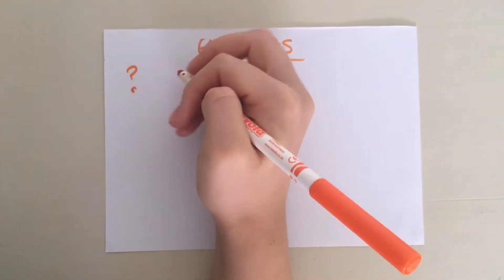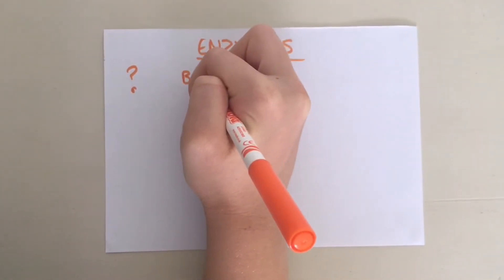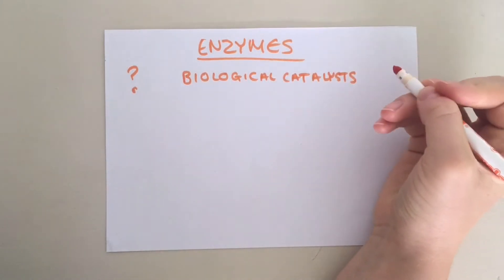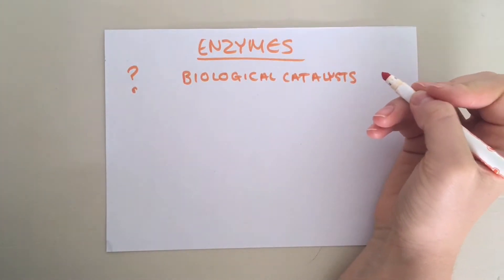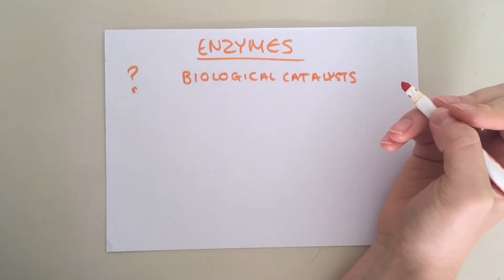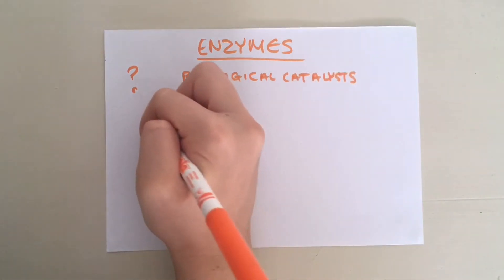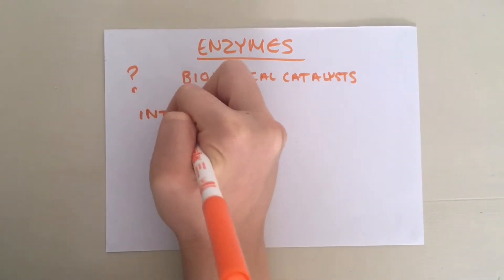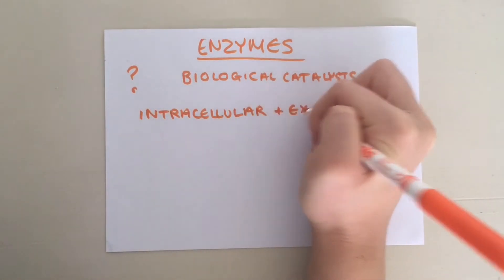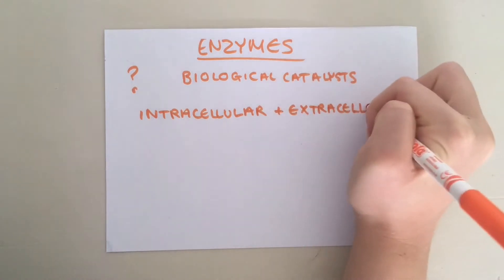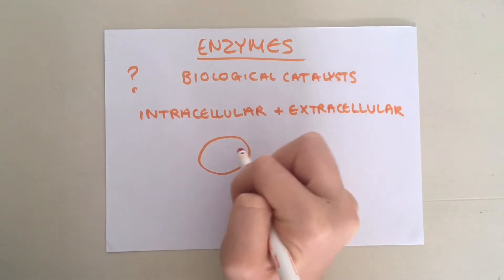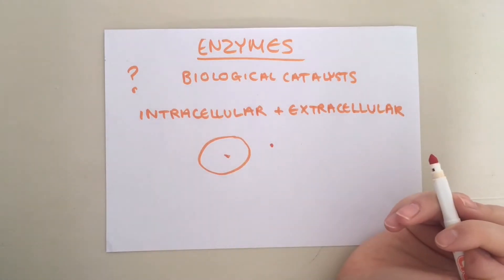Enzymes are known as biological catalysts, meaning they speed up the rate of chemical reactions without being used up in the process. Enzyme action can be both intracellular and extracellular, meaning they can catalyse reactions inside and outside of cells.